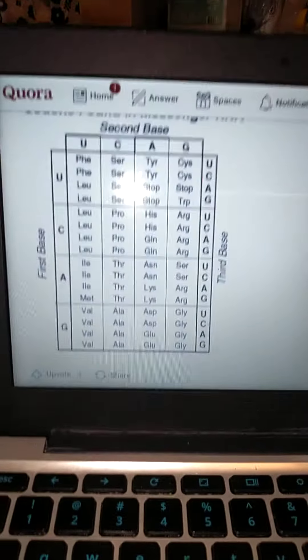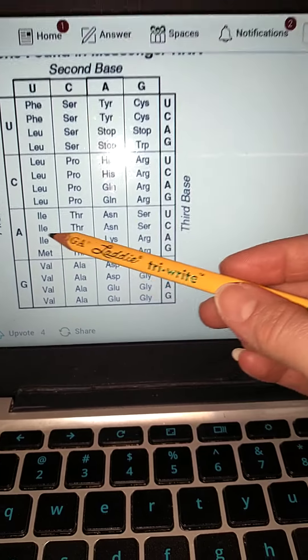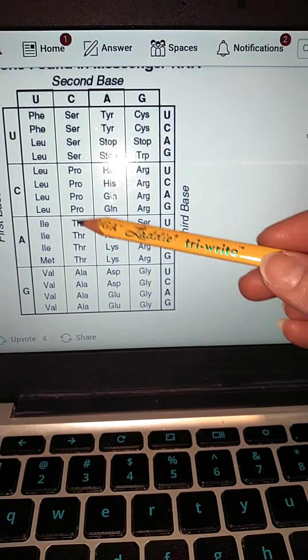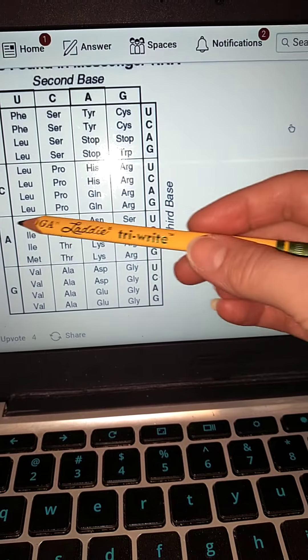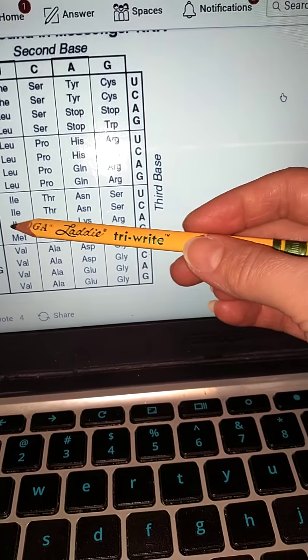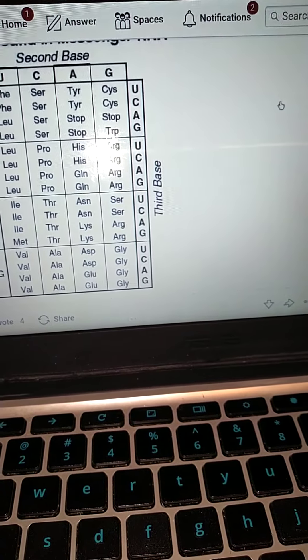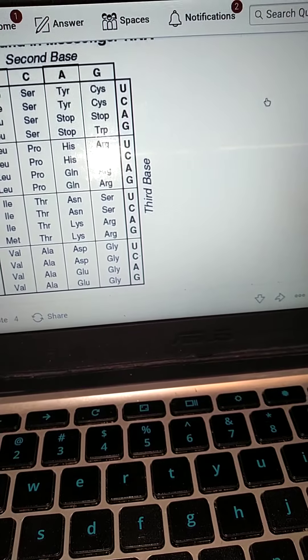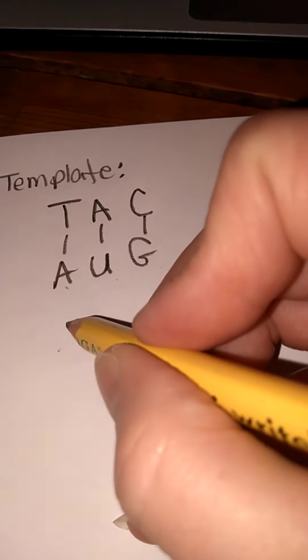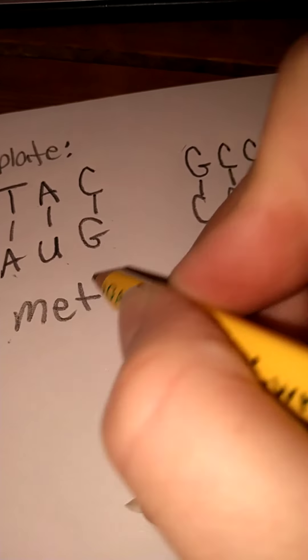If we have bases A, U, G and we look at our table here, we have A so it's going to be in this row. U, so it's going to be in this box right here. And it's A, U, G so we follow G over. It's M, E, T, methionine. So M, E, T will be our first amino acid. A, U, G is going to code for methionine. So we're going to write it down.